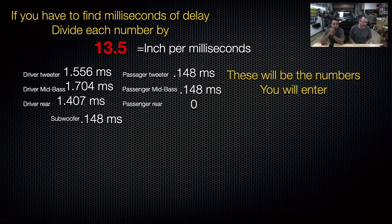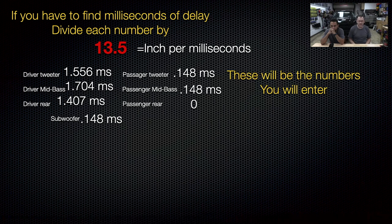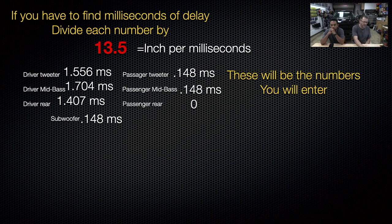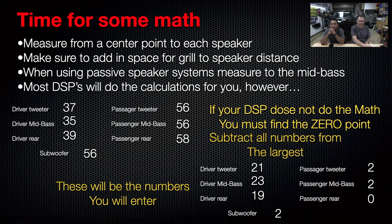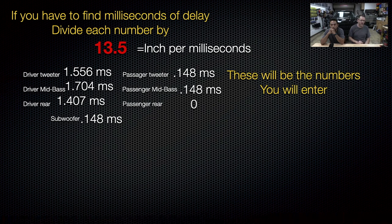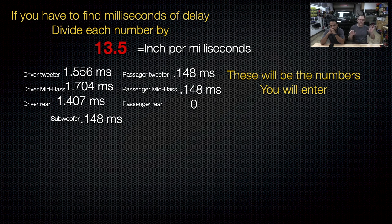If you have to find milliseconds of delay — which comes into play when combining two DSPs together — you can find out what all your milliseconds of delay are and type those numbers in. How you do that is divide by 13.5, because 13.5 is what equals one inch per millisecond. So taking the zero-point numbers — the 21, 23, 19, 2, 2, 2, 0 — and dividing those by 13.5, you end up with values like 1.5, 1.7, 1.4, down to zero milliseconds of delay. Some DSPs give you the option for inches or milliseconds, so this is the math if you prefer to enter milliseconds manually.